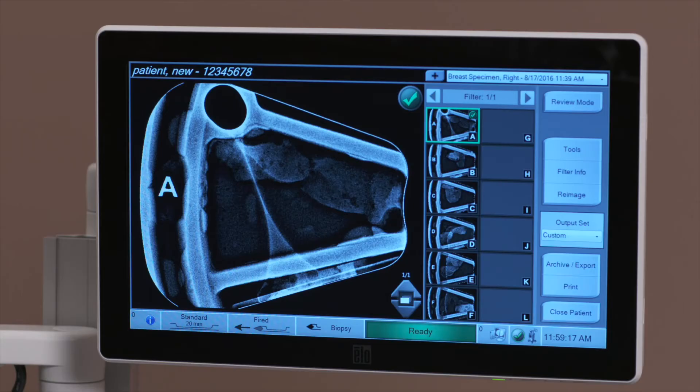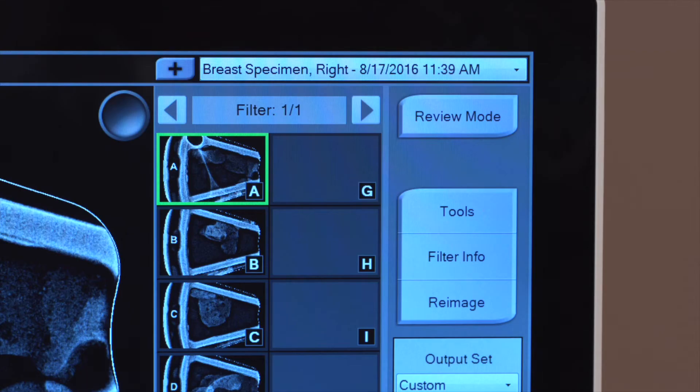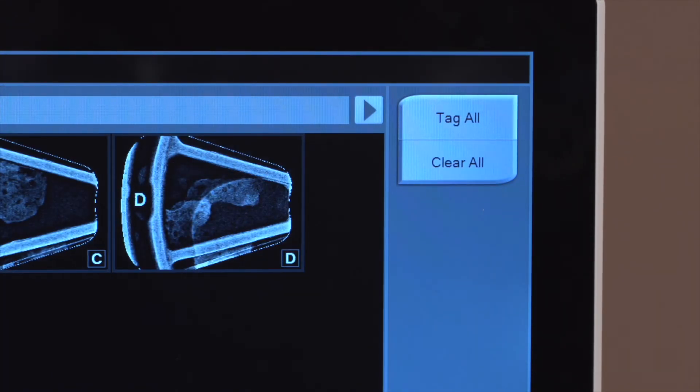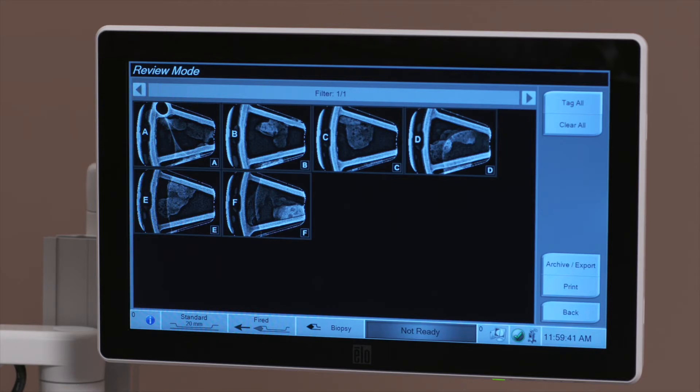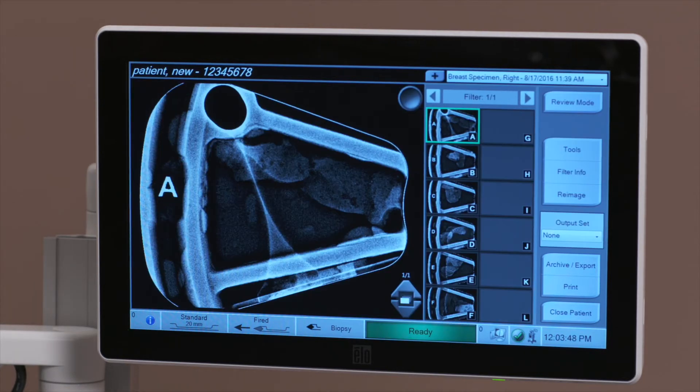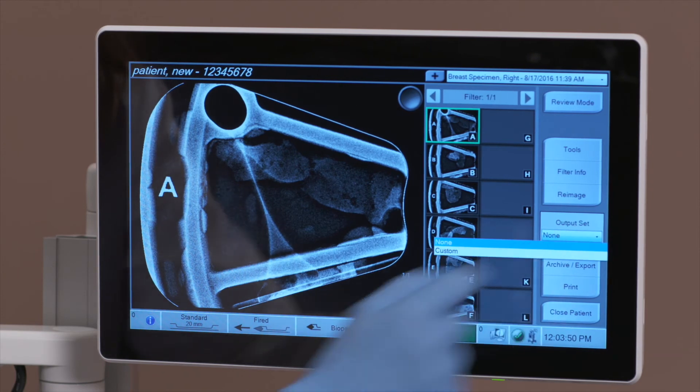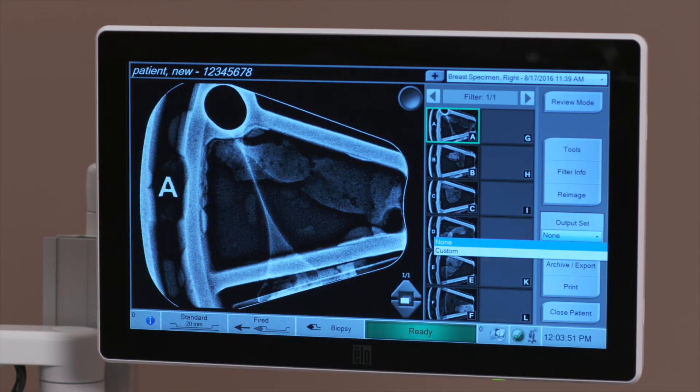If an image or images are tagged, the check mark is burned into the images that are exported, archived, or printed from the system. The review button allows you to view larger thumbnails of all the images at the same time. The images are sent automatically to the output devices in the selected output group when a patient is closed.